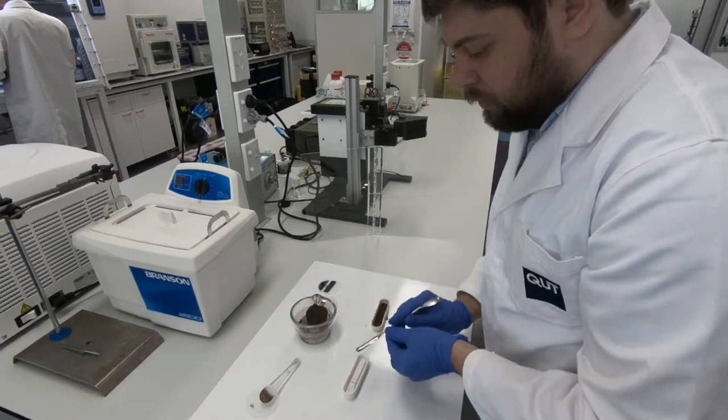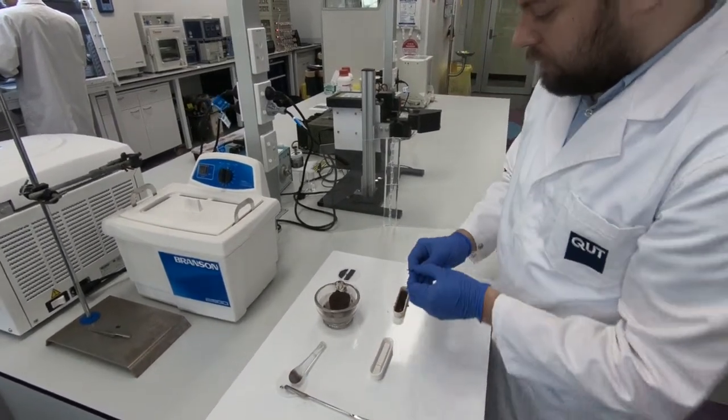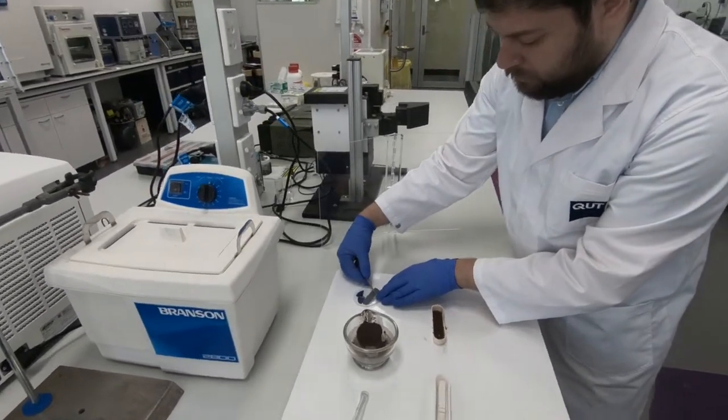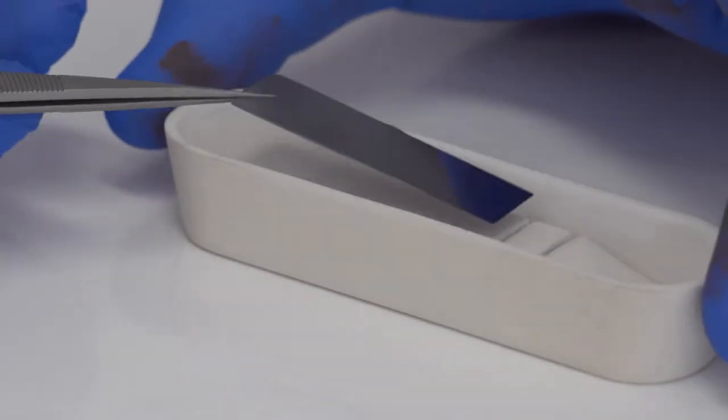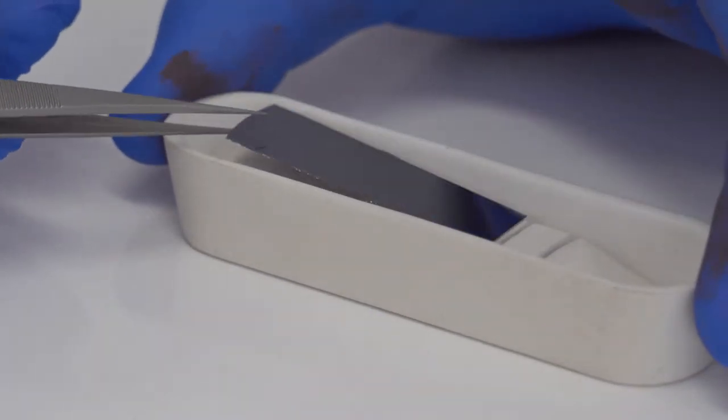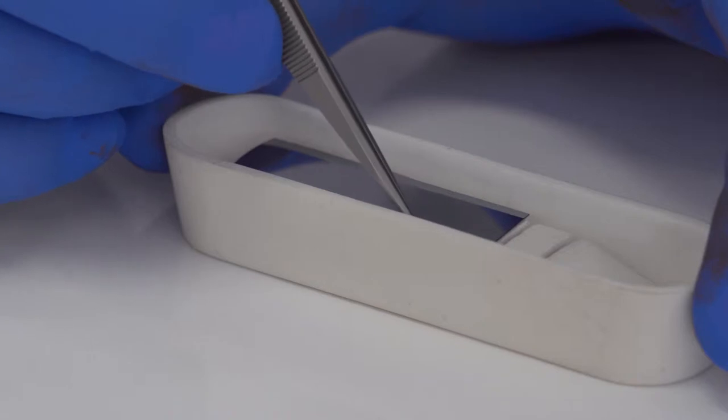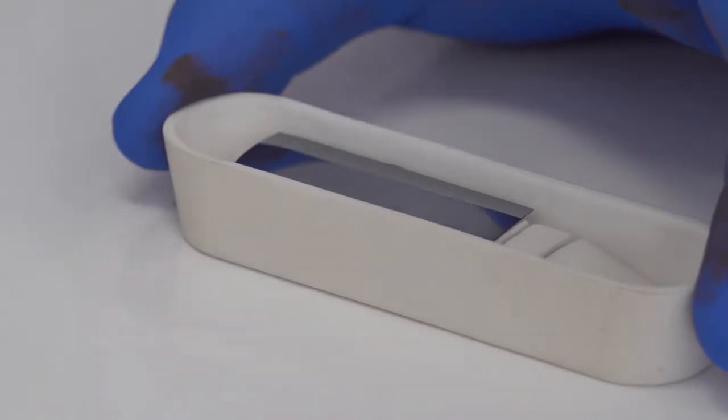Now when it's ready, we can put our substrate, silicon wafer, in another bowl. And this is the actual place where our nanostructure will be grown.